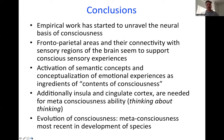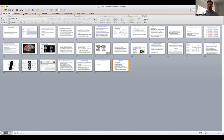In conclusion, empirical work has started to unravel the neural basis of consciousness. Fronto-parietal areas and their connectivity with sensory regions of the brain seem to support conscious sensory experiences. Activation of semantic concepts and conceptualization of emotional experiences are ingredients of the contents of consciousness. The anterior insula and anterior cingulate cortex are needed for meta-consciousness — thinking about thinking. In terms of the evolution of consciousness, meta-consciousness is believed to be most recent in the development of species. I hope this lecture was informative, entertaining, and inspiring, and I look forward to building more lectures on YouTube.